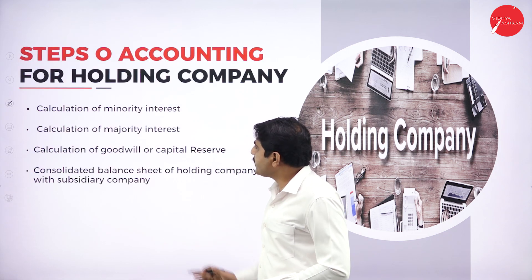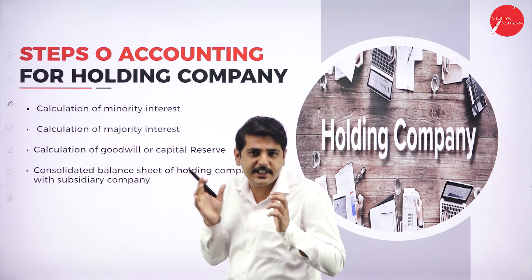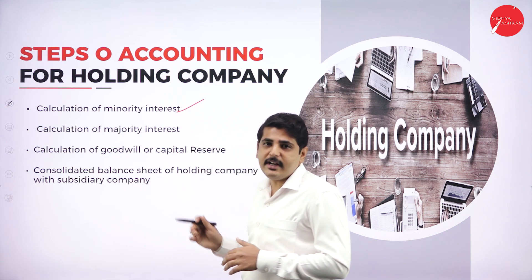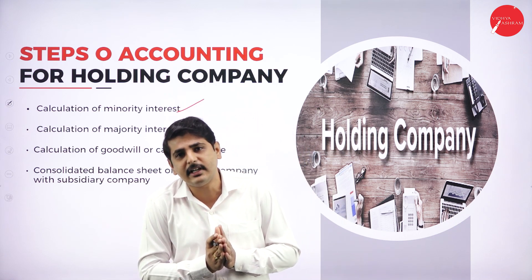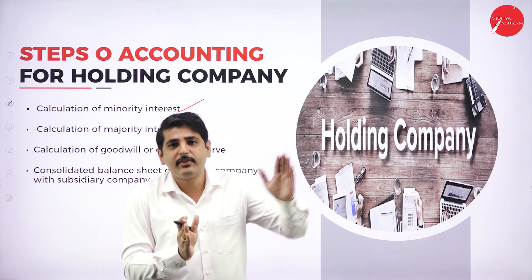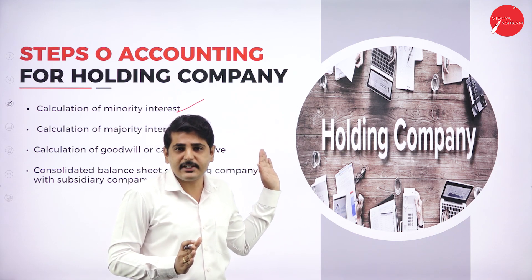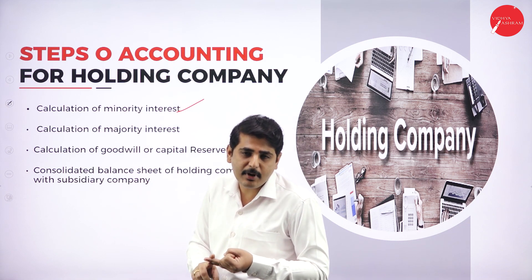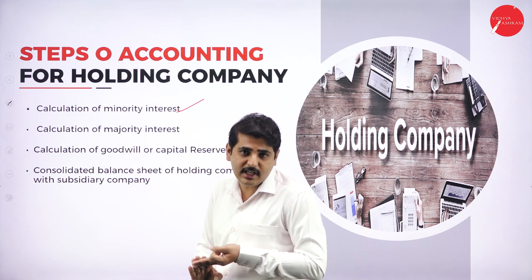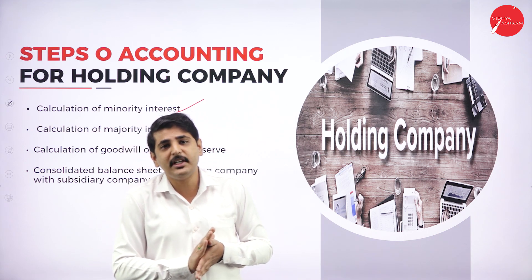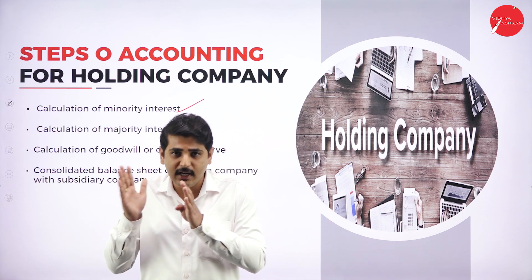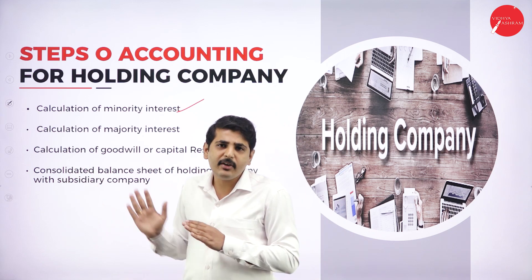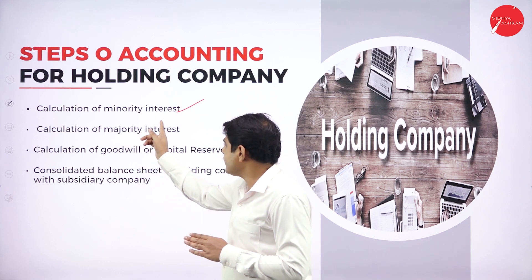Now, the important steps in solving holding company problems. First, calculate minority interest — the amount payable from the holding company to the subsidiary company's minority shareholders. This includes the face value of shares, capital profit, revenue profit, capital reserve, and revenue reserve of the minority shareholders. This amount is shown on the liability side of the balance sheet until paid.